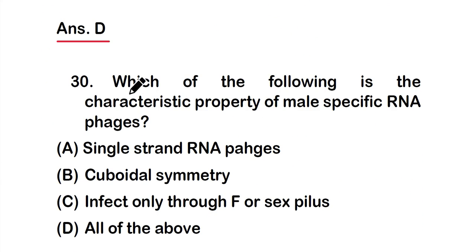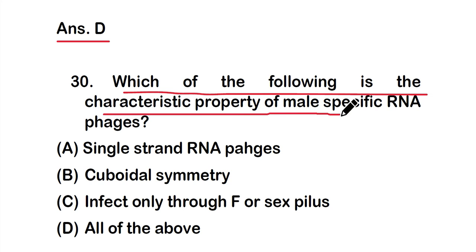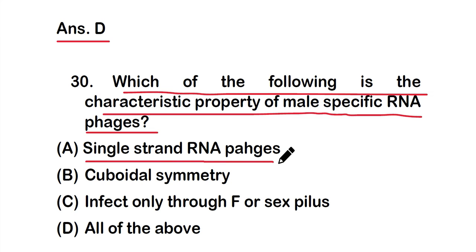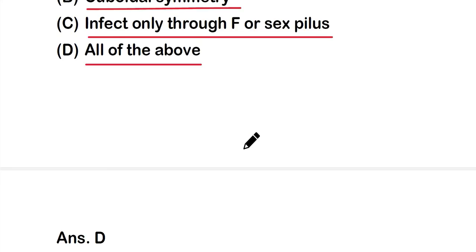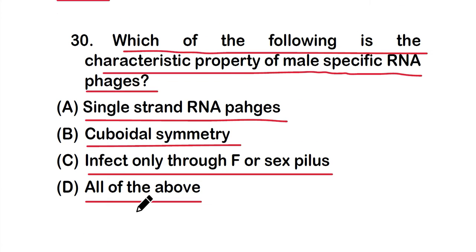Question number 30: Which of the following is the characteristic property of male-specific RNA phages? Options: A) single-stranded RNA phages, B) cuboidal symmetry, C) infect only through F or sex pili, or D) all of the above. The right answer is option D — all of the above are correct characteristic properties of male-specific RNA phages.